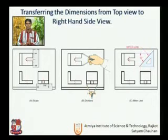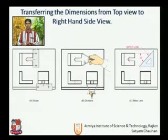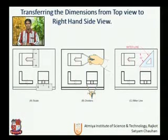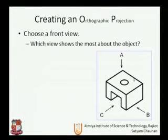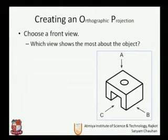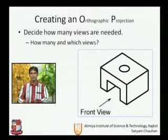The first method was the scale method, where we use direct measurements of the object to draw the orthographic projection. The second was the divider method, using a compass to project the orthographic view. The third method was the miter line method — using a miter line to complete the orthographic projection and obtain multi-views. Commonly, we use the miter line method. We also saw how to decide which view will be the front view.